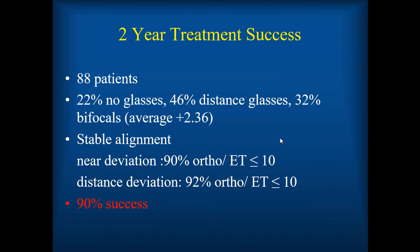Did this last? Was this a successful treatment long-term? We had 88 patients followed up for two years. 22% were in no glasses at that point, 46% were wearing distance glasses, and 32% still had some bifocal. The alignment was quite stable: 90% of patients with correction had near deviation less than 10 prism diopters, and 92% were less than 10 prism diopters at distance. None of them were exotropes. So a 90% success rate.